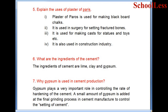Question 5: Explain the uses of plaster of Paris. Plaster of Paris is used for making blackboard chalk. It is used in surgery for setting fractured bones. It is used for making casts for statues and toys. It is also used in the construction industry.